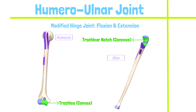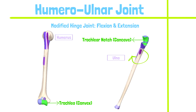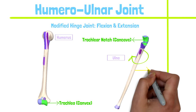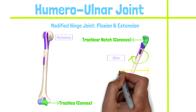It is referred to as a modified hinge joint because the ulna experiences a slight amount of axial rotation and side-to-side motion as it flexes and extends.